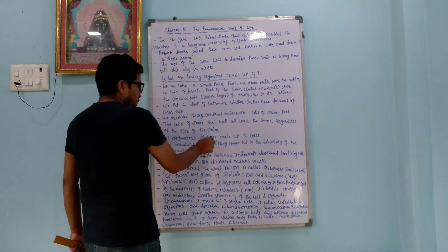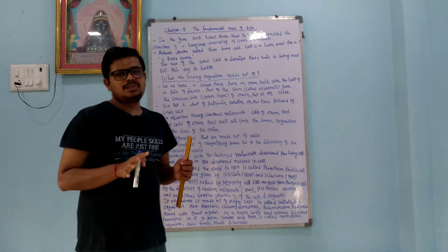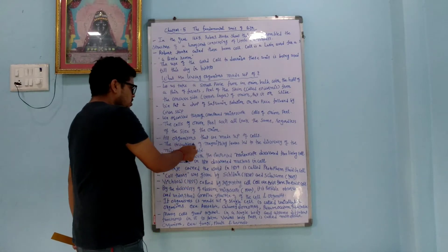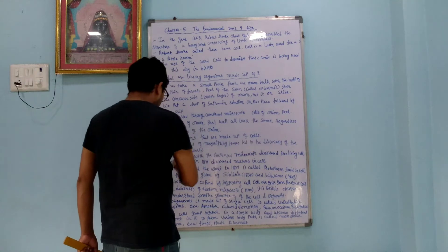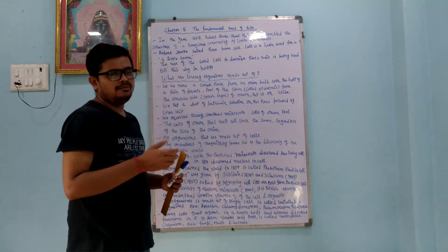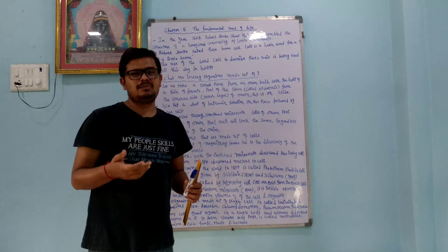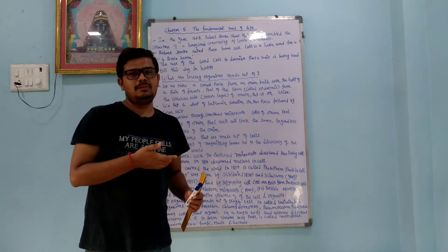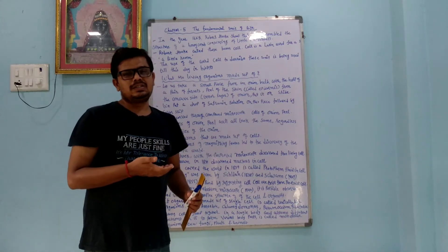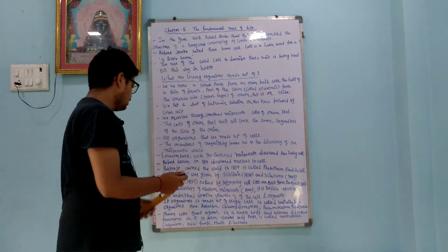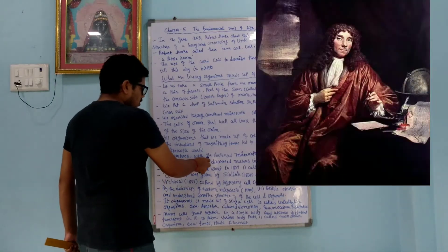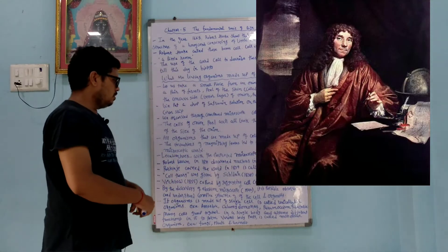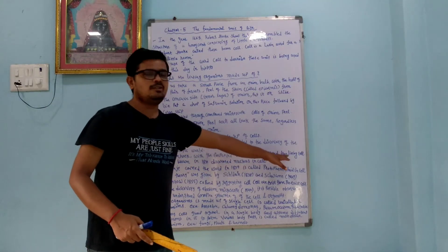Most organisms are made up of cells. The invention of the magnifying lens led to the discovery of the microscopic world. From the magnifying glass came the simple microscope, then the compound microscope, and nowadays we have STM and AFM. Leeuwenhoek, with an improved microscope, discovered free-living cells.